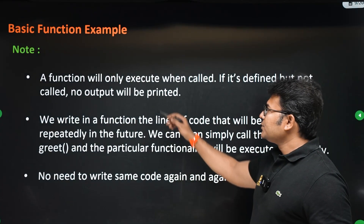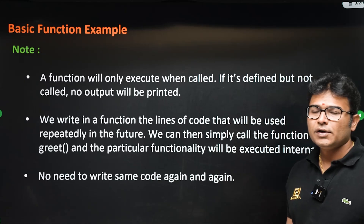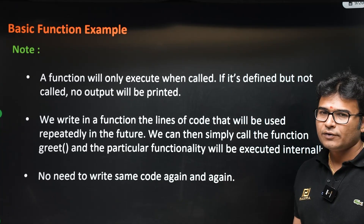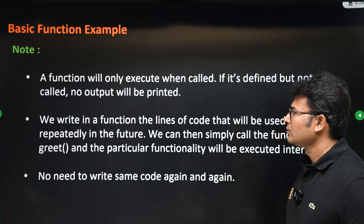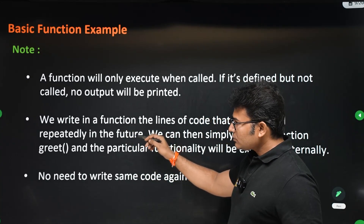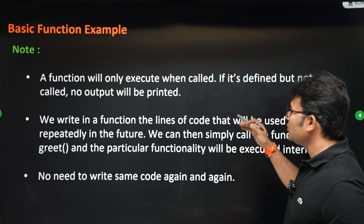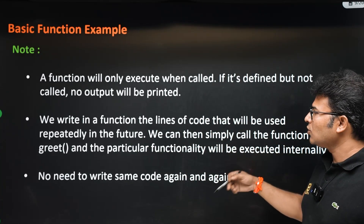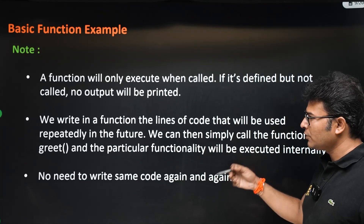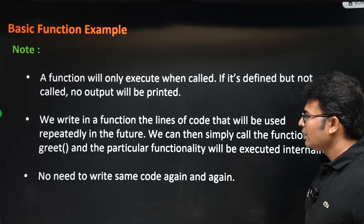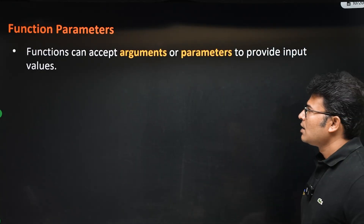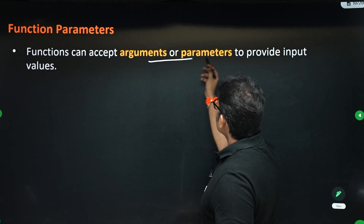A function will execute only when it is called. If you write a function and don't call it, it will never get executed. We write a function once with the lines that will be used repeatedly — we don't write the function again and again. Once you have written a function, you can use it repeatedly without rewriting the same code.